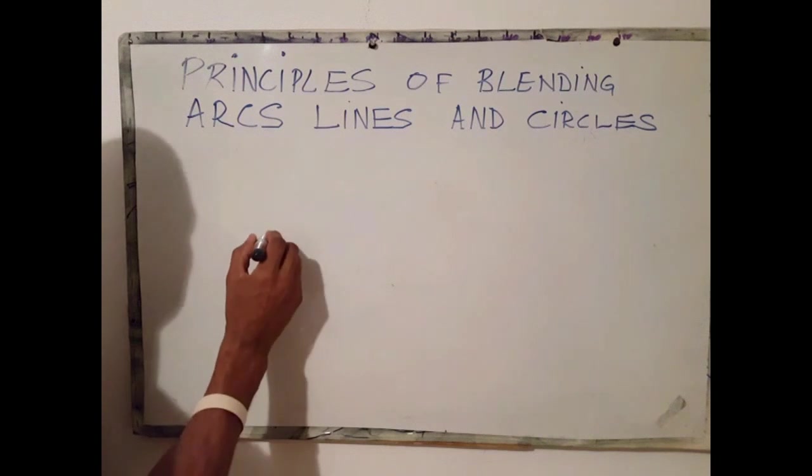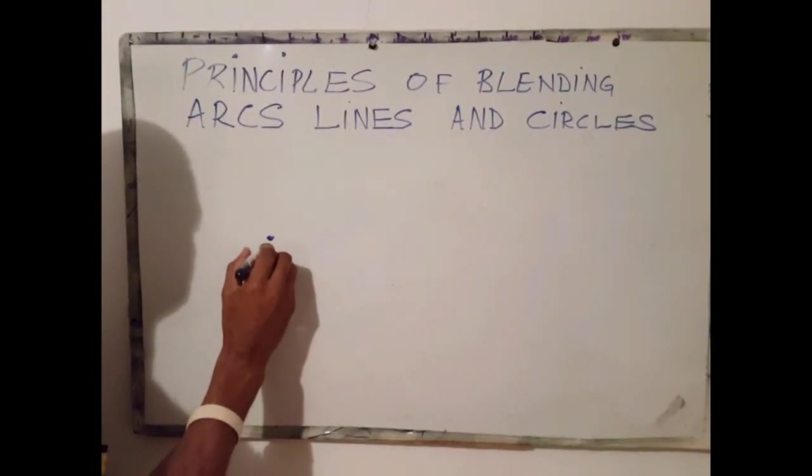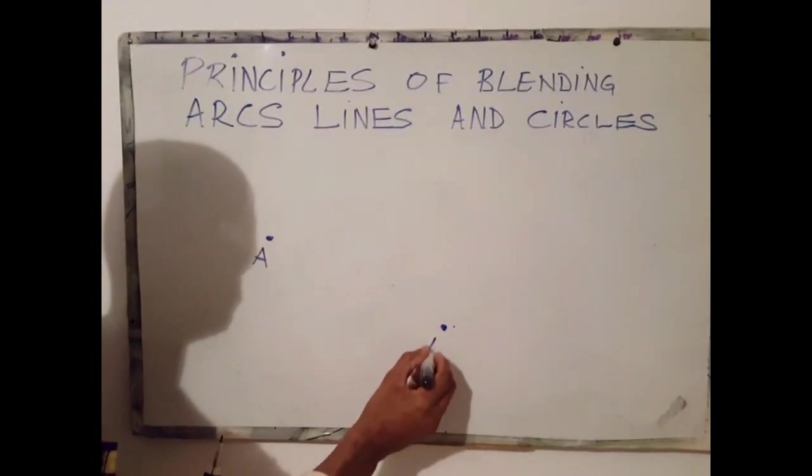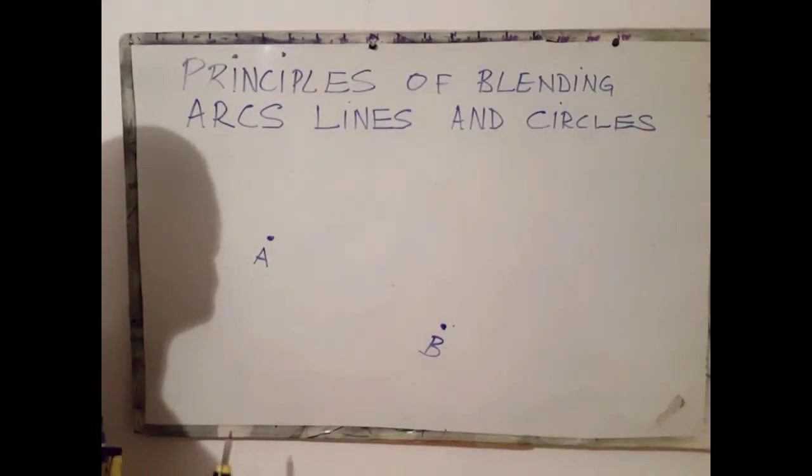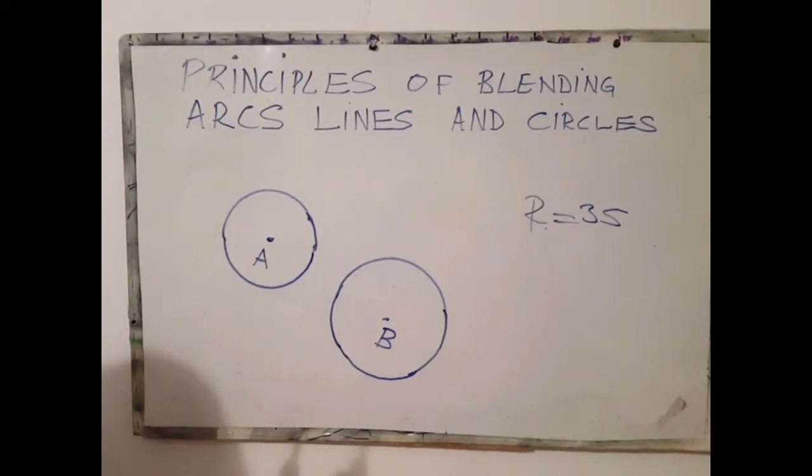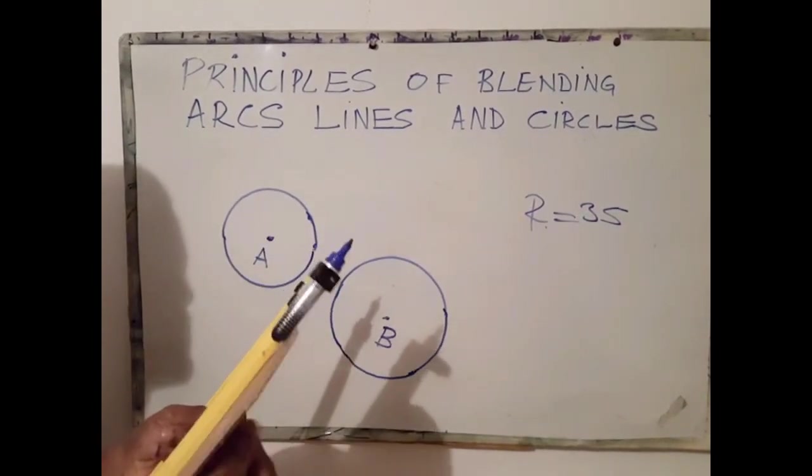Let's say for example, I have a circle here, let's label the circle A, second circle here, which I'll label B. Say for example, this.